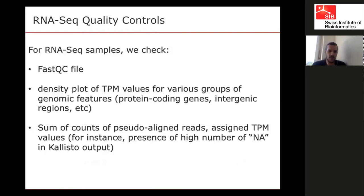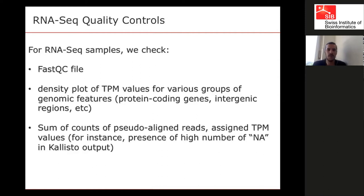For RNA-seq quality control, we use FastQC and generate density plots of TPM values to check whether the distribution of expression values is in an acceptable range. We also check TPM values and the counts of reads aligned — if we get only a few thousand reads mapped in a library, obviously something was wrong with that library. The data in BG are only of the highest quality.